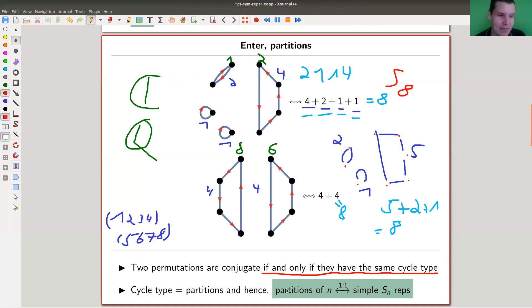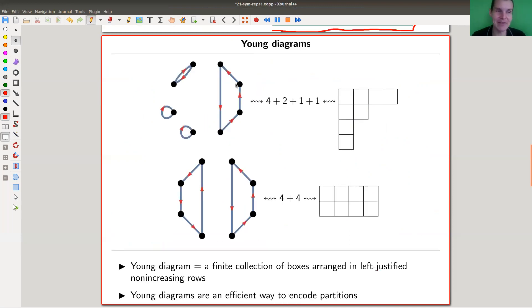And there was actually nothing special about eight. So the general statement is partitions of n, in one-to-one correspondence with simple S_n representations, which is already a cool statement in itself. And the video could stop here. But as you can see here, well, as you can see now, I have a demo slide, so the video doesn't stop.